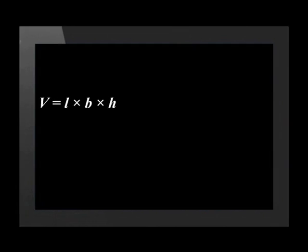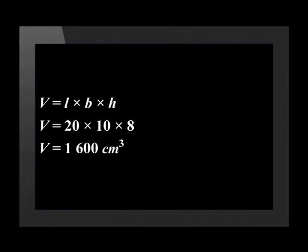Let's do an example to calculate the volume of a box that is twenty centimetres in length, ten centimetres in width and eight centimetres in height. Start with the formula V equals L times B times H. Now fill in the numbers: twenty for the length, ten for the breadth and eight for the height. Twenty times ten times eight equals one thousand six hundred cubic centimetres.